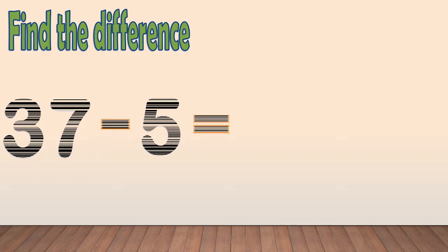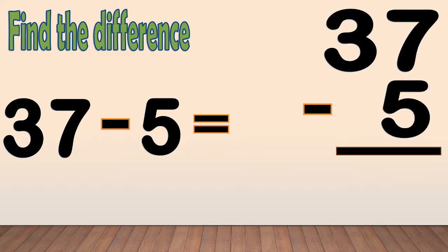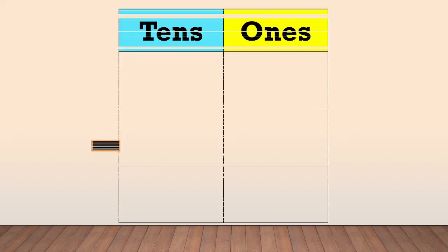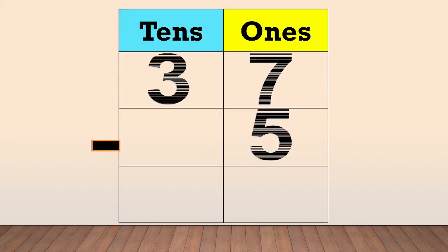Another example. Find the difference: 37 minus 5. First, arrange the numbers in columns. Place the digit of the number in a column based on its place value. 37 minus 5.